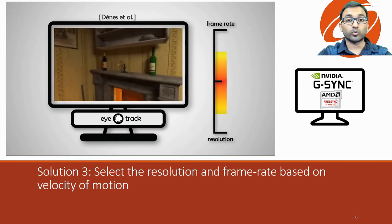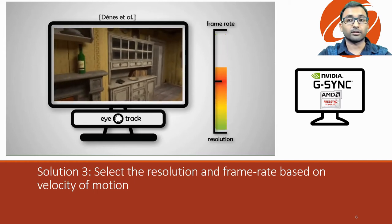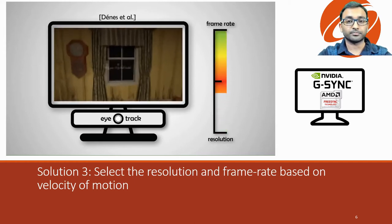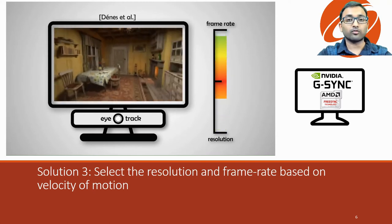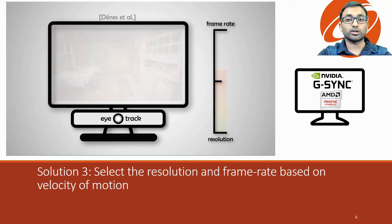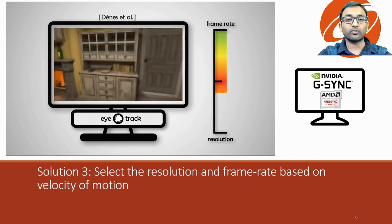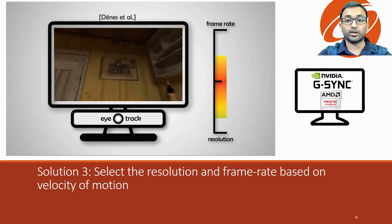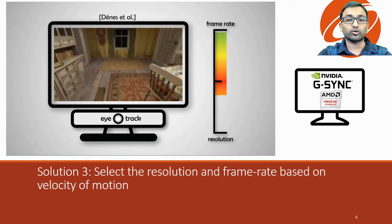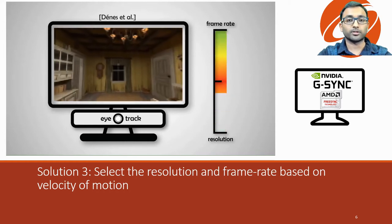In one of our earlier work, we showed how we can take advantage of adaptive sync displays and eye trackers to find a trade-off between frame rate and resolution. As you can see in this video, high resolution is used when the camera is still or the eye is fixating, and high frame rate is used when the camera is in motion or the eye is following an object. This approach works great; however, it requires an eye tracker, a technology which is yet to be widely adopted. Furthermore, it doesn't account for content and thus reduces the frame buffer resolution uniformly. With recent advances in GPU technology such as variable rate shading that allows for more flexible local control of shading resolution, this approach becomes suboptimal.